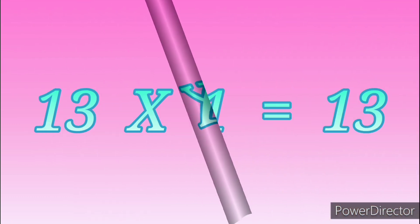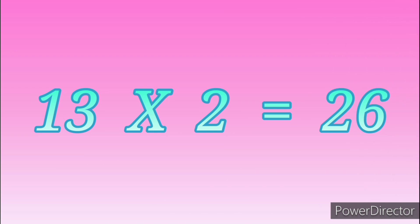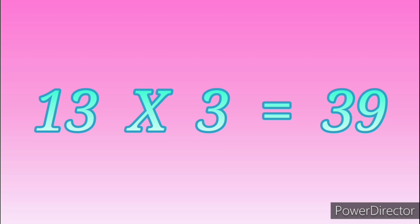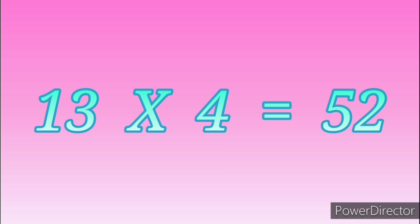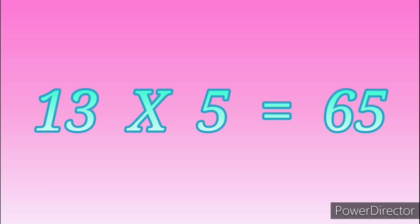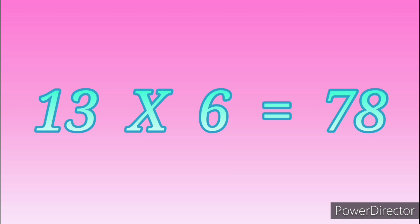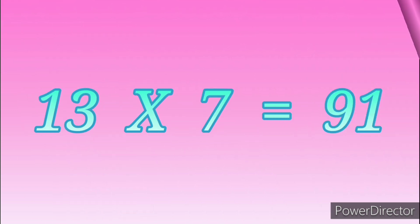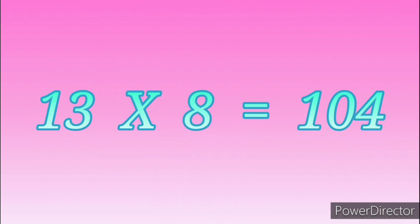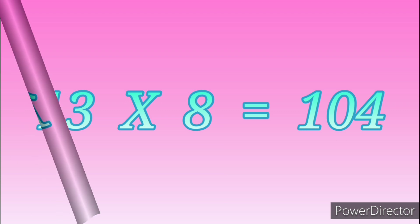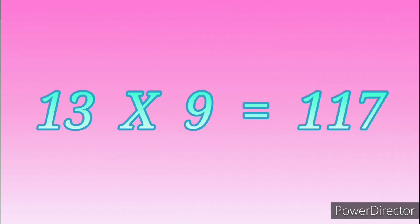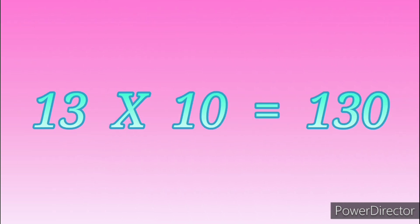Thirteen fives are sixty-five, thirteen sevens are ninety-one, thirteen eights are one hundred and four, thirteen nines are one hundred and seventeen, thirteen tens are one hundred and thirty.